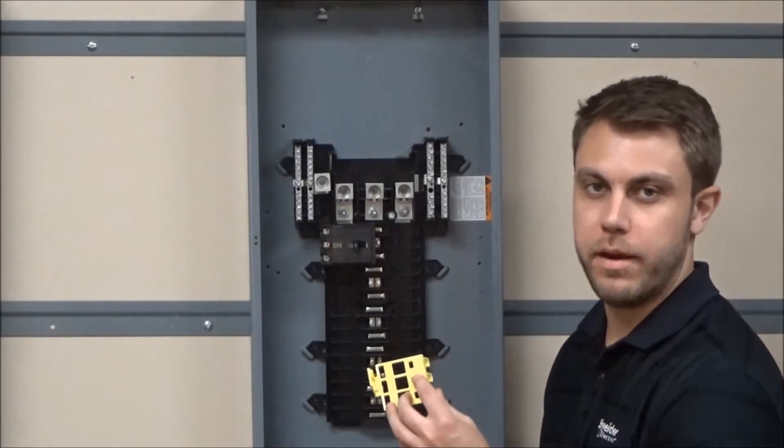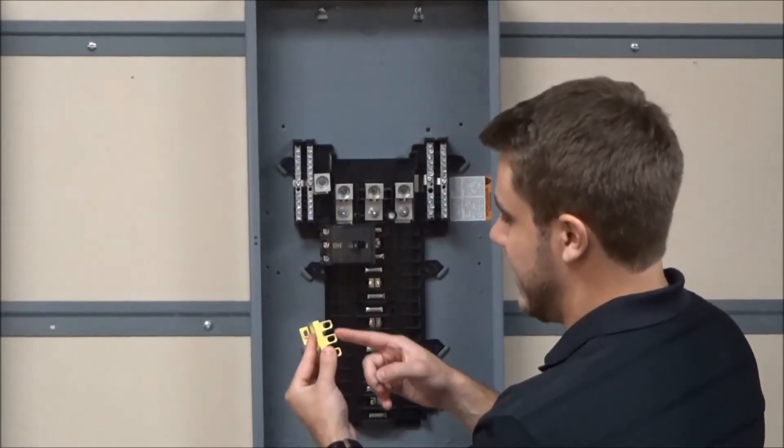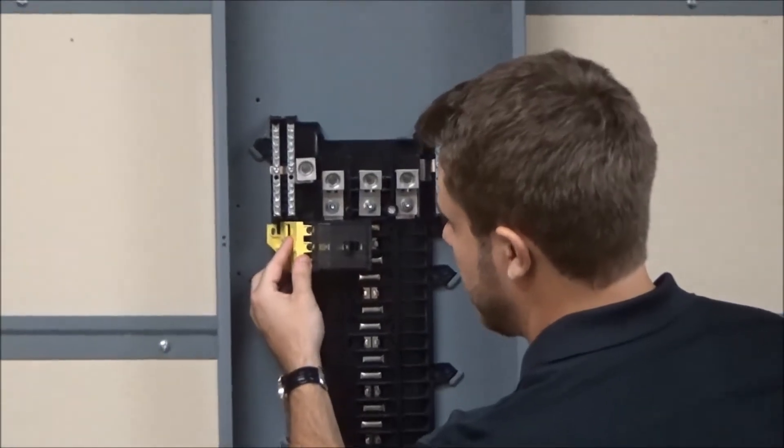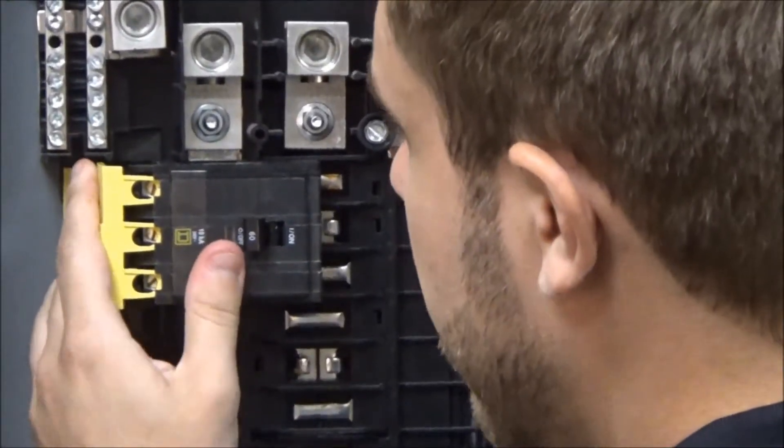First you will take the service barrier and you insert the tabs into the slots on the back fed main breaker, snapping it into place.